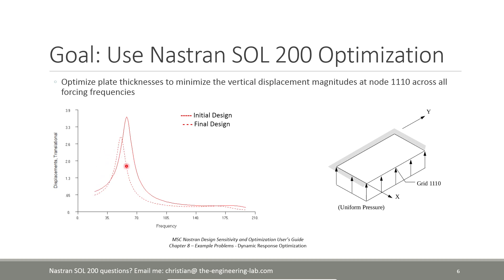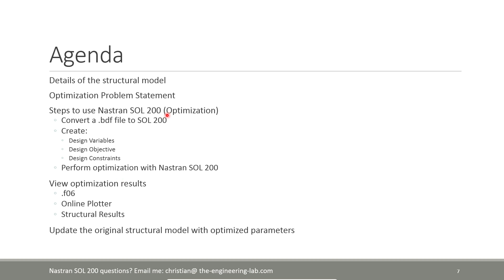Before getting started, I'll make a few comments about the structural model and then go over the optimization problem statement — a summary of all the things you want to vary in your finite element model. Then we'll discuss the objective and constraints, define them explicitly for NasTran Solution 200, perform the optimization, look at the results, and finally walk through the process of updating the original plate with the optimized thicknesses.